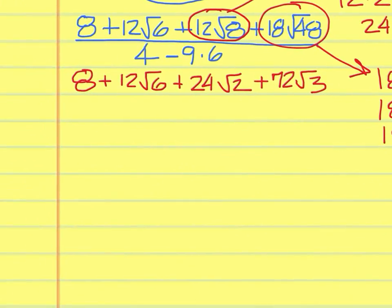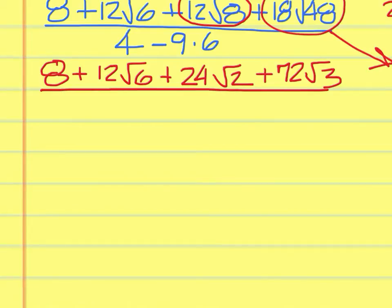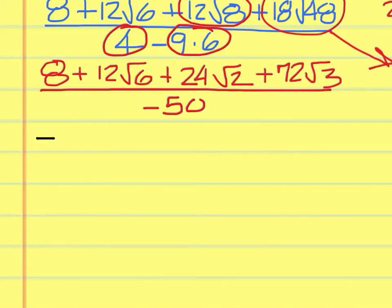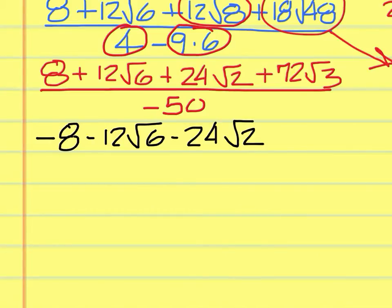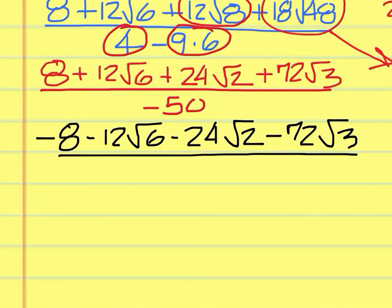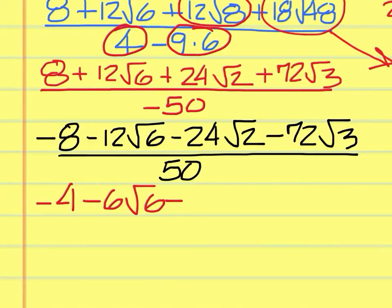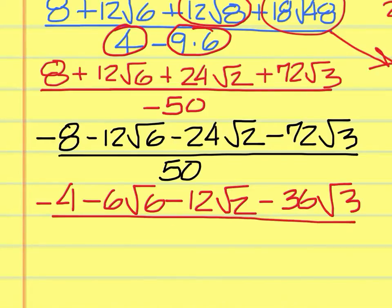On the bottom, we end up with 4 minus 54, which is negative 50. We can't have that negative 50 on the bottom, so we're going to have to change the sign of everything to get negative 8 minus 12 square root of 6 minus 24 square root of 2 minus 72 square root of 3, and on the bottom you'll have a negative 50.